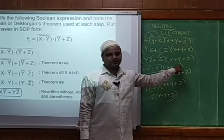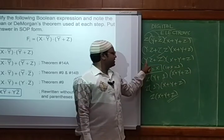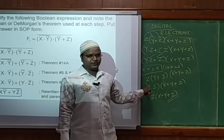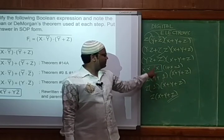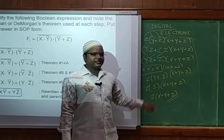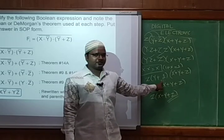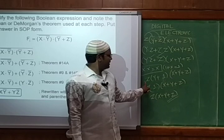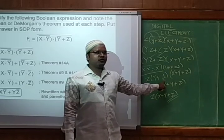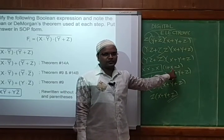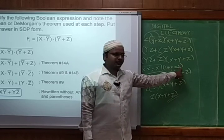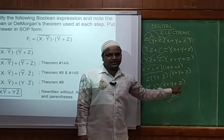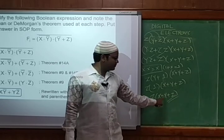The term x + y + z remains as is. In the two-term expression, I take z common, giving z(y + 1) and then x + y + z. By Boolean law, y + 1 equals 1, so that term becomes 1. Therefore z·1 simplifies to z, and x + y + z remains as is.